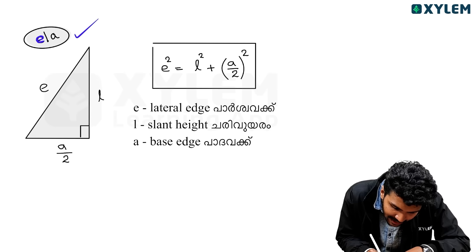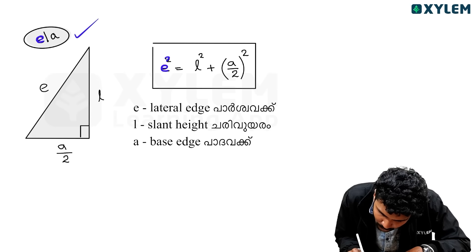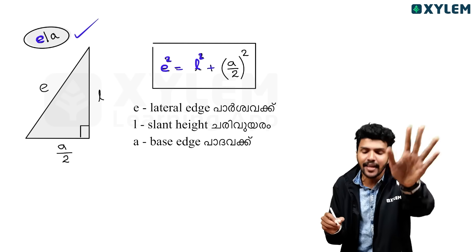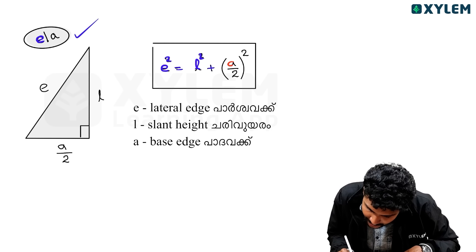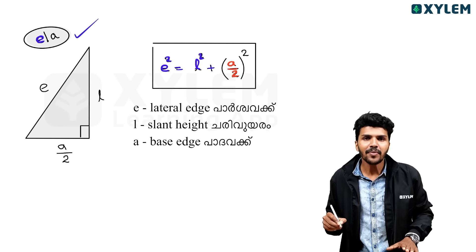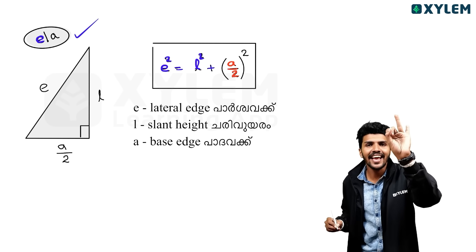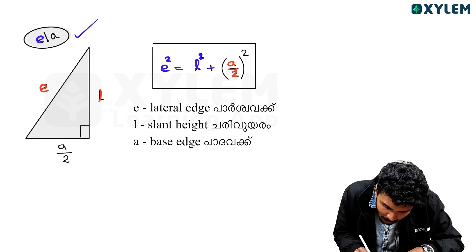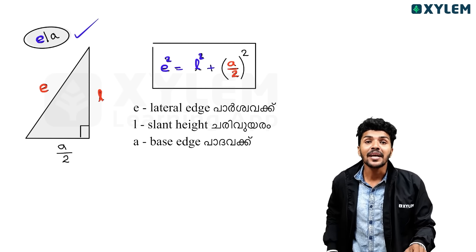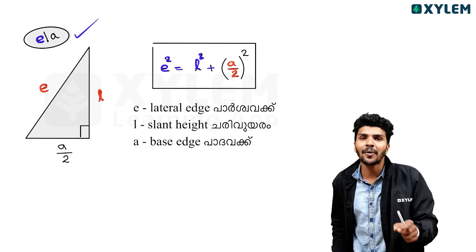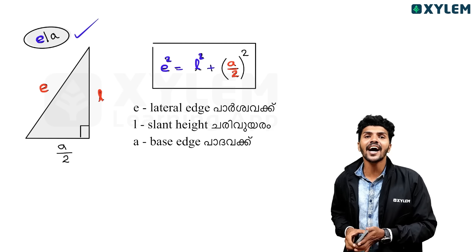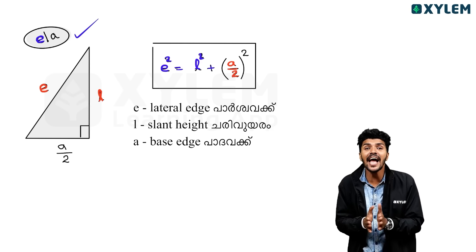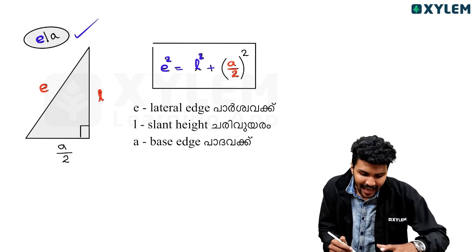This is the question: E squared is equal to L squared plus (A by 2) squared, because E, L, and A by 2 form a right-angled triangle.